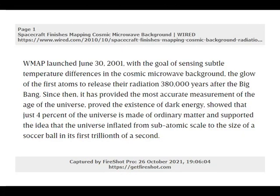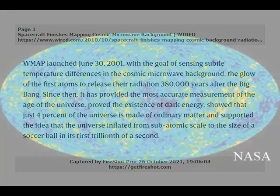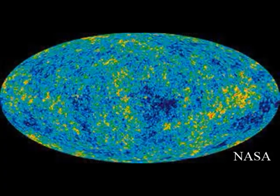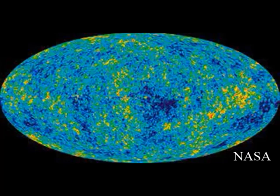Since then, it has provided the most accurate measurement of the age of the universe, proved the existence of dark energy, showed that just 4% of the universe is made of ordinary matter, and supported the idea that the universe inflated from subatomic scale to the size of a soccer ball in its first trillionth of a second. A 2013 map of the background radiation left over from the Big Bang, taken by the ESA's Planck spacecraft, captured the oldest light in the universe. Planck's observations revealed that the universe was older than previously thought: 13.82 billion years old, rather than 13.7 billion years old. The research observatory's mission is ongoing and new maps of the CMB are released periodically.